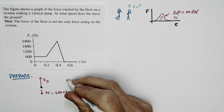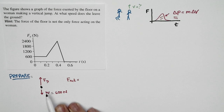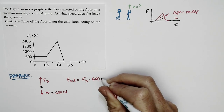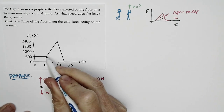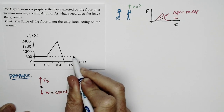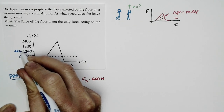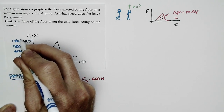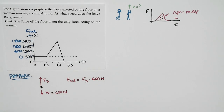We're interested not in Fy but in F_net. The upward force on her is Fy, the downward force is weight, so F_net equals Fy minus 600 Newtons. We can take this graph and turn it into a graph of F_net by shifting the axis up. The new zero is at 600 N, so the new scale reads 0, 600, 1200, and 1800. Now the vertical axis represents F_net.